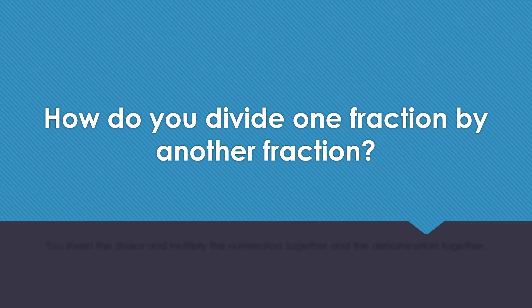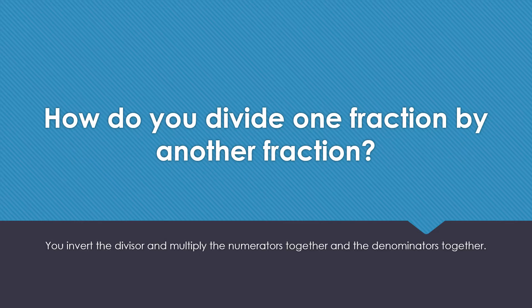How do you divide one fraction by another fraction? You invert the divisor and multiply the numerators together and the denominators together.